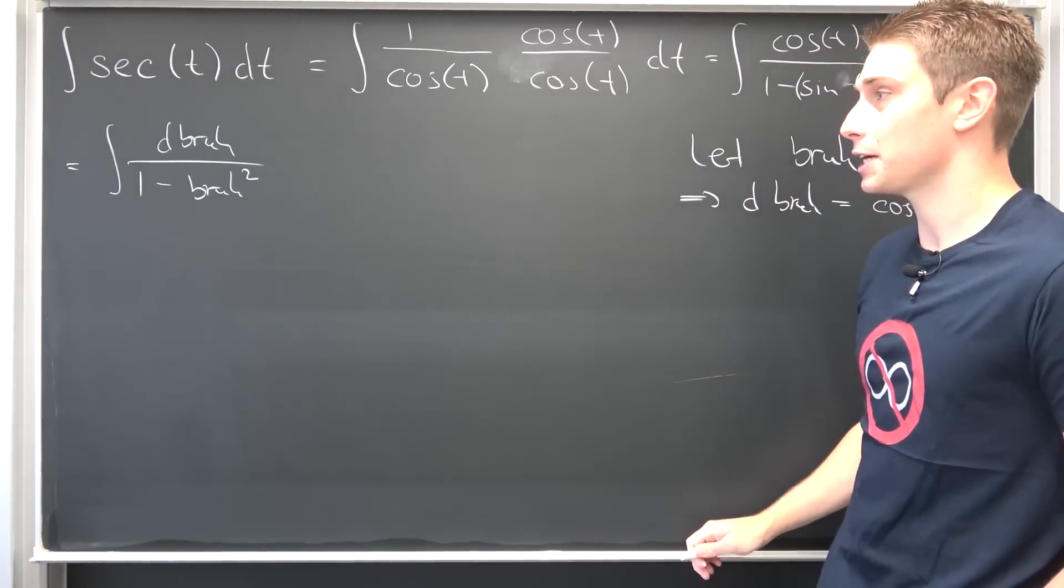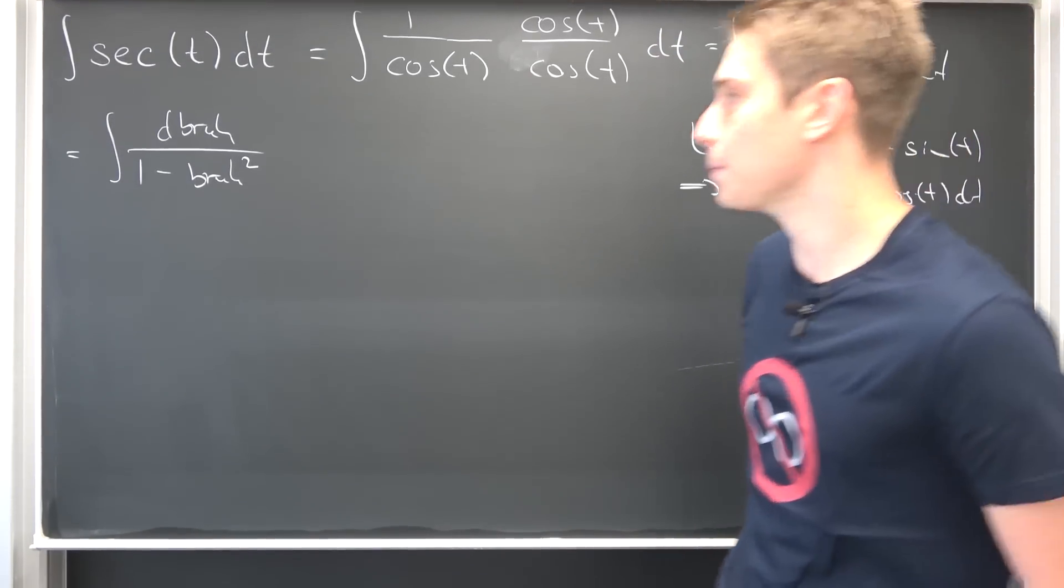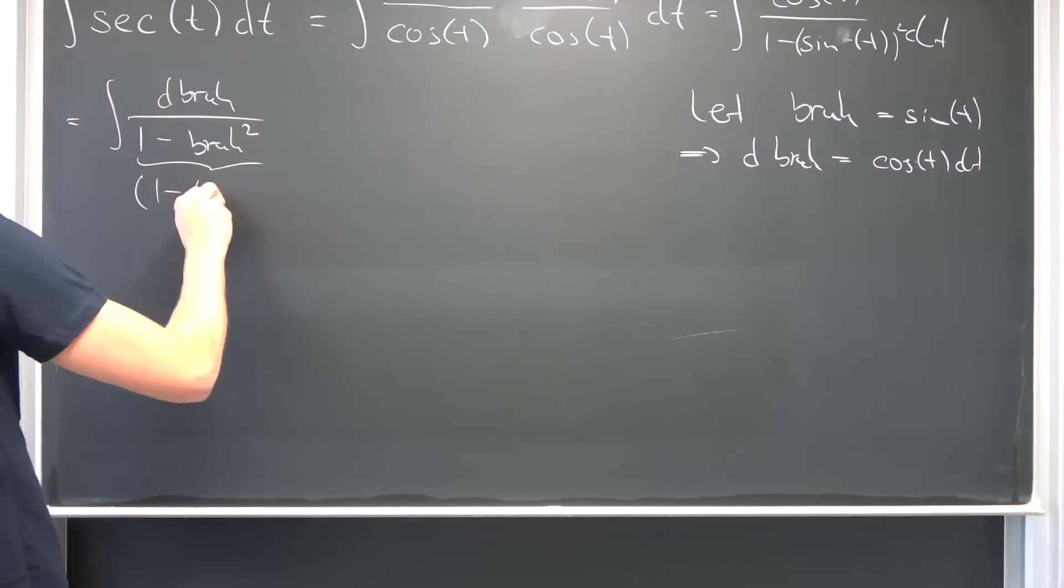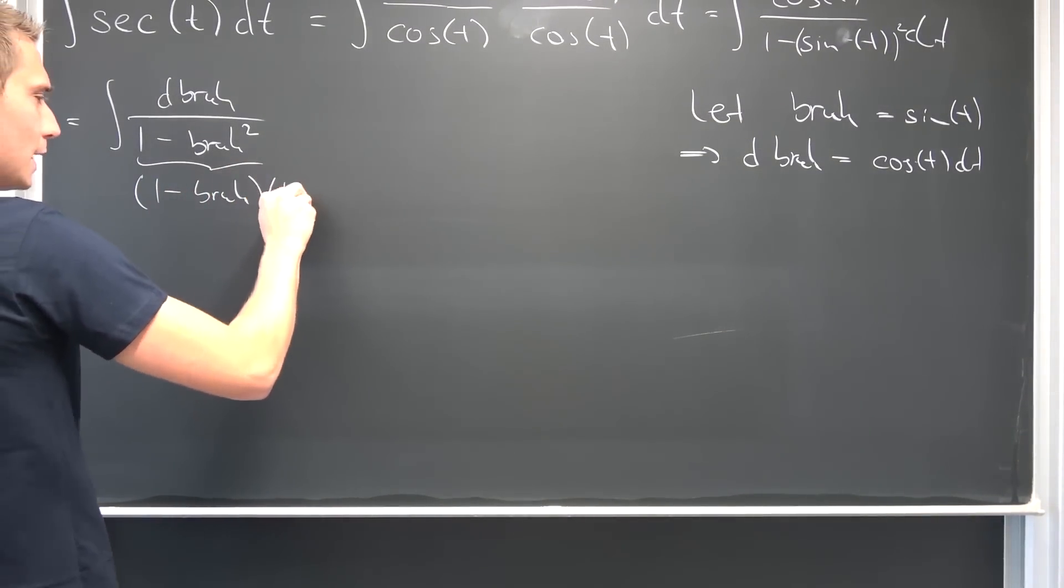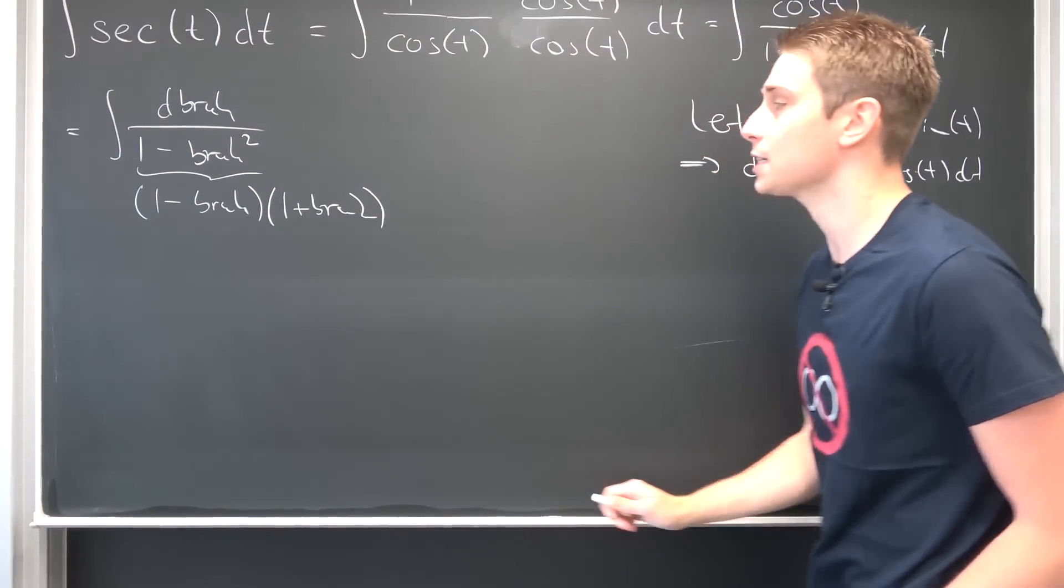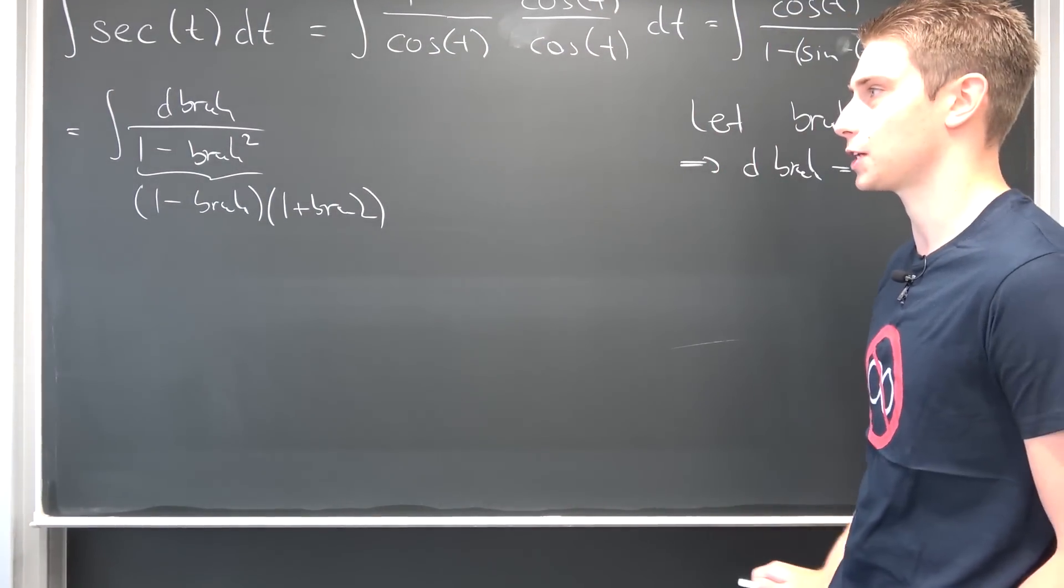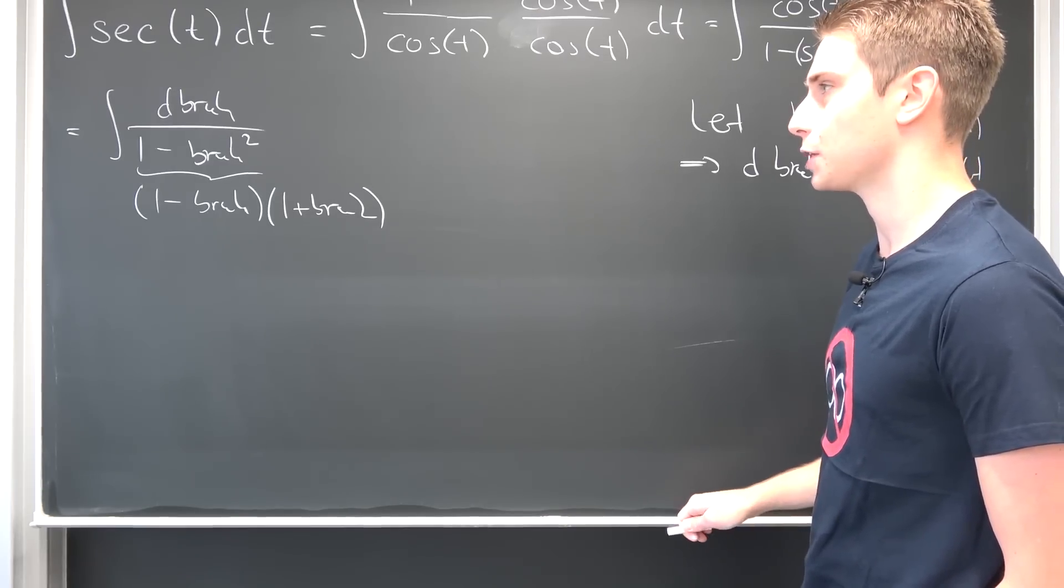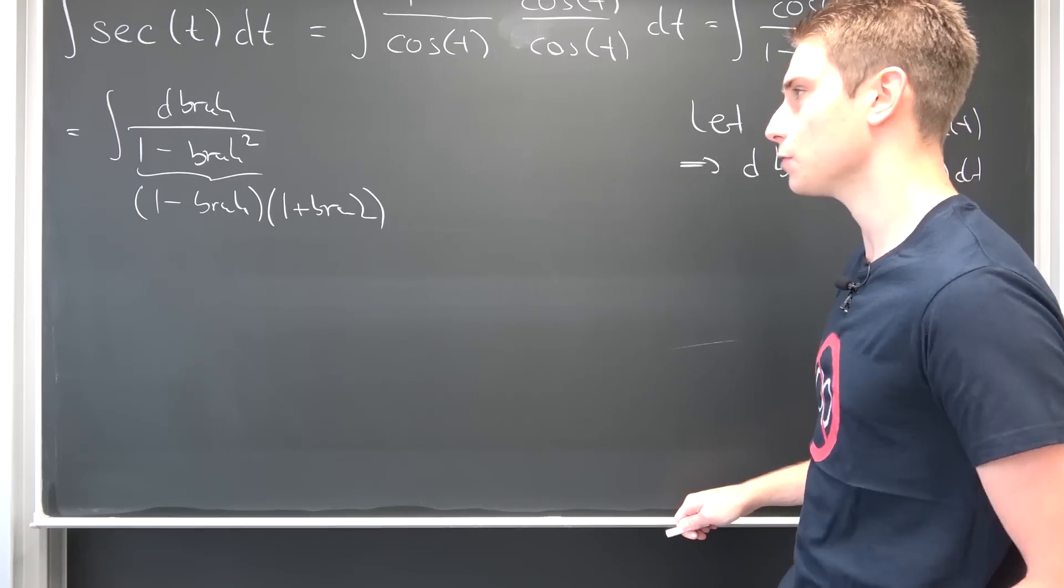And this is quite easy to evaluate. Now we can do partial fractions. Because this thing down here in the denominator is nothing other than 1 minus bruh times 1 plus bruh. And yeah, basically we can do partial fractions now.